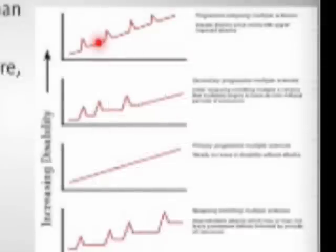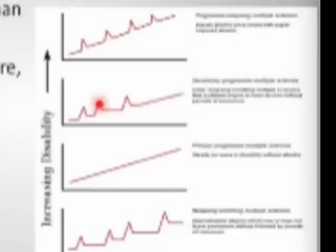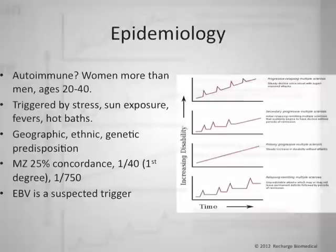Here's a typical progressive relapsing MS course. As we get older, maybe you have times when there isn't much activity and then it flares during times of stress. In general, MS is not considered a curable condition, but one that gets progressively worse with bouts of flares.